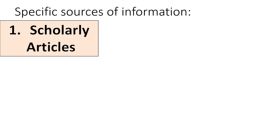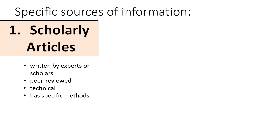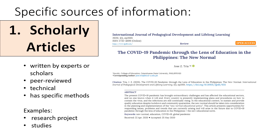Here are some specific sources of information. First, scholarly articles. These are articles written by experts or scholars, peer-reviewed, technical, and have specific methods. Examples are research projects and studies. They involve results of experiments, surveys, or review and analyses of existing data. Here is an example from the International Journal of Pedagogical Development and Lifelong Learning, entitled 'The COVID-19 Pandemic Through the Lens of Education in the Philippines: The New Normal.' This is an example of a scholarly article.